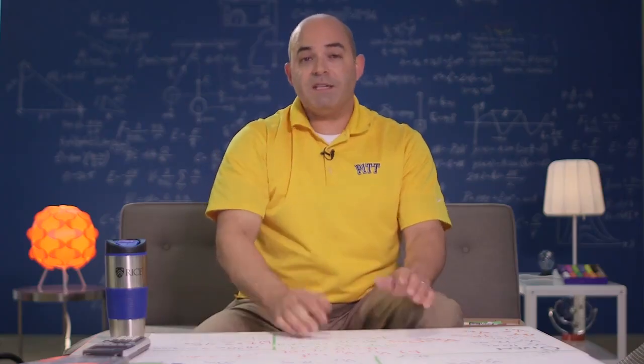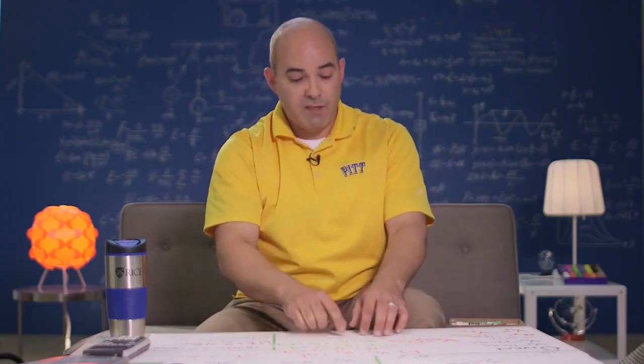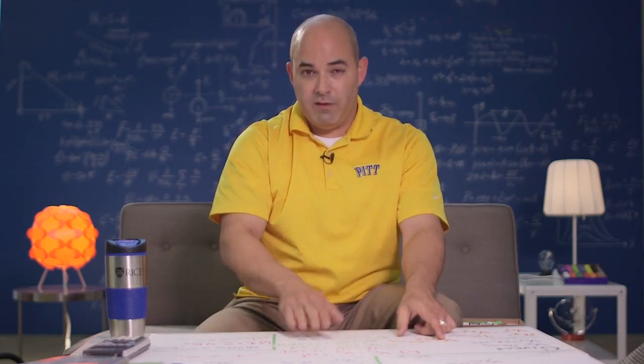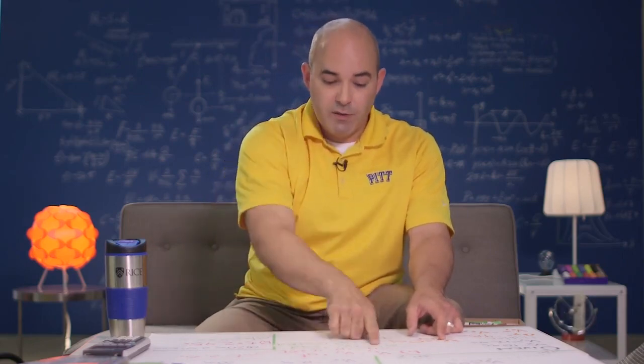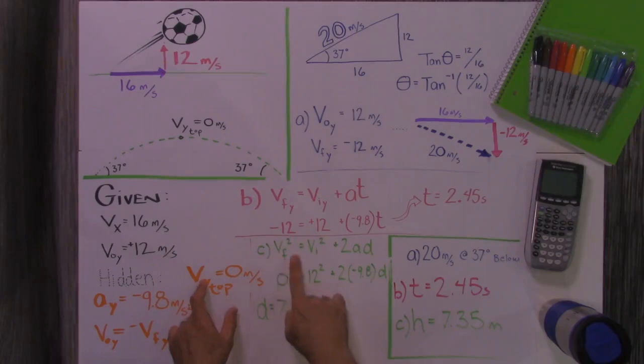All right. Almost done. The last thing was to find out how high it went. That's where I used that other hidden given about the velocity in the Y direction at the top is 0. So I used this formula. V final squared equals V initial squared plus 2AD. And that D is the displacement in the Y direction. That's going to give us the maximum height.